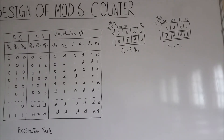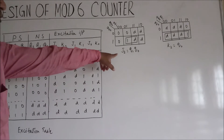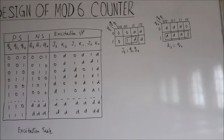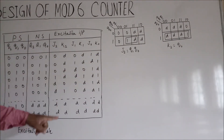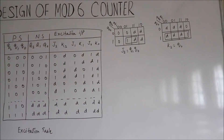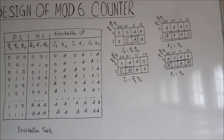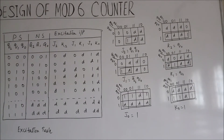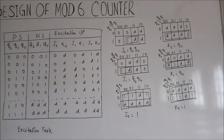We draw the K-map for getting the expressions of J2 and K2. From the table we put the values of J2, and after grouping, J2 equals Q1·Q0. Similarly for K2, putting the values in the K-map gives K2 equals Q0. We then draw the K-maps for J1, K1 and J0, K0. We get J1 equals Q2-bar·Q0, K1 equals Q0, J0 equals 1, and K0 equals 1.